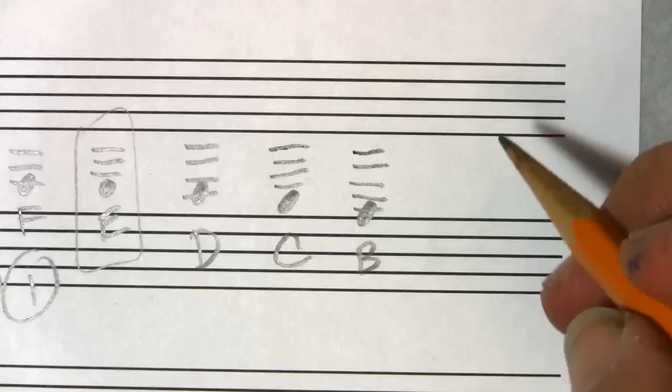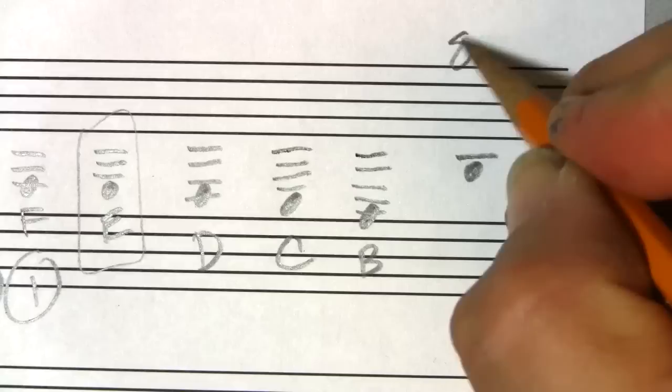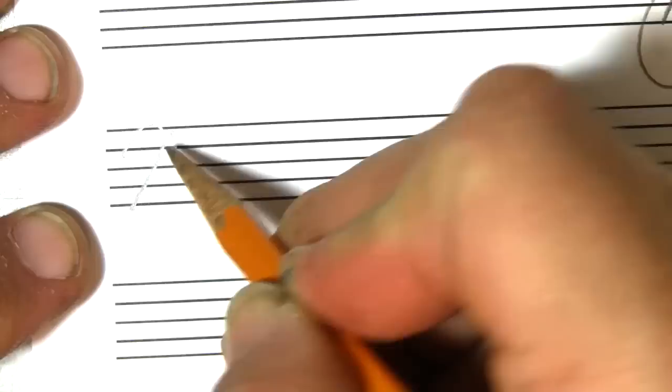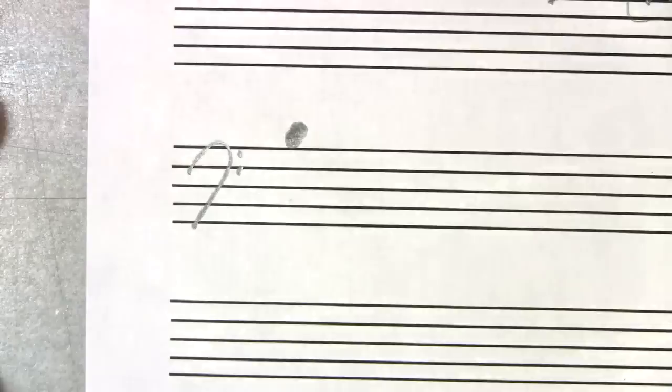When you get notes that low — like a seventh string guitar with five ledger lines down for an open B — you see how it gets unwieldy. There are two things you can do: you can write the note up higher and write 8vb, meaning octave below, or you can use the bass clef.